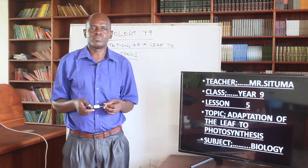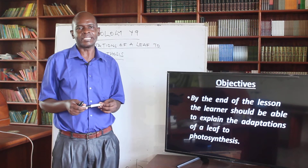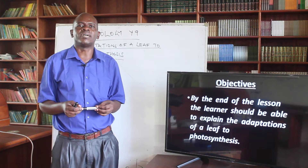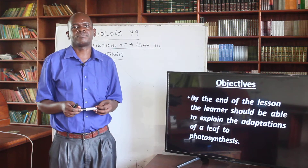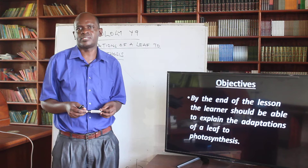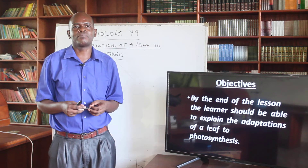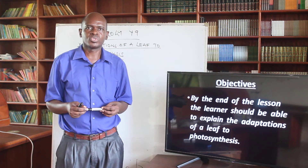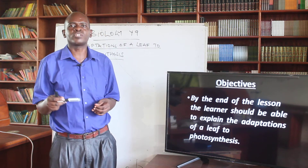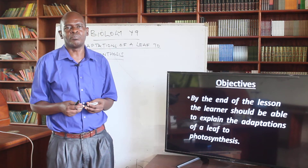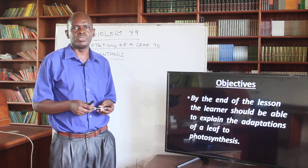So, we want to look at the adaptation of the leaf to photosynthesis. At the end of the lesson, we should be in a position to explain the adaptations of a leaf to photosynthesis — how a leaf is adapted to the process of photosynthesis. Remember that in the explanation based on the adaptations of the leaf, each particular adaptation must be attached to its function.